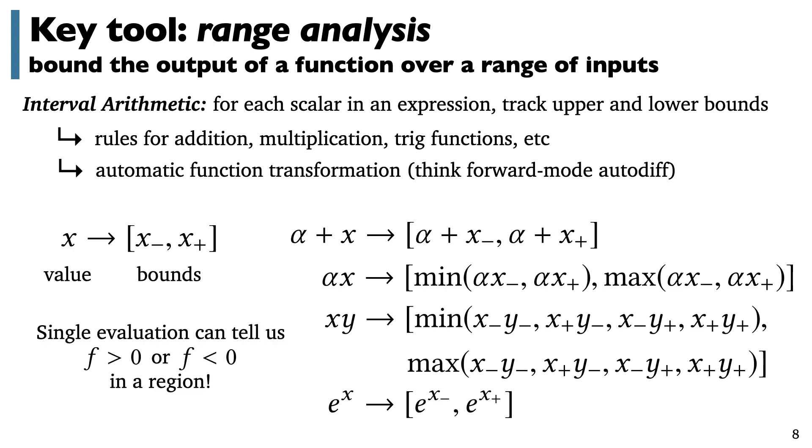This is the foothold that lets us start analyzing these implicit functions. We can take a region of space, do a forward evaluation of a network with range analysis, and get out a bound on the value of a neural net over that region. So for instance, if this bound is greater than zero, then it tells us that that entire region is certainly strictly outside the shape, no matter how crazy the function encoded by a neural network might be. So this lets us start building up geometric queries.